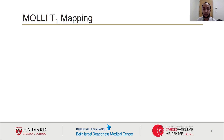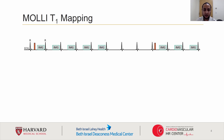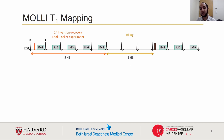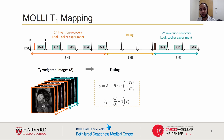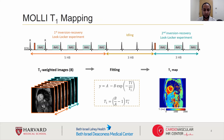Traditionally, a T1 map is estimated using a MOLLE sequence. The sequence first collects five T1-weighted images, followed by a three heartbeat idling period, before collecting an additional three T1-weighted images. The eight T1-weighted images are then fed into a set of fitting equations, which produce a T1 map.